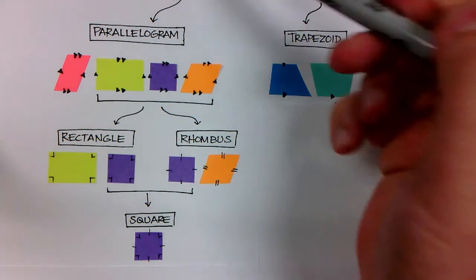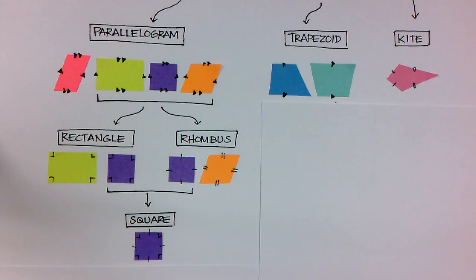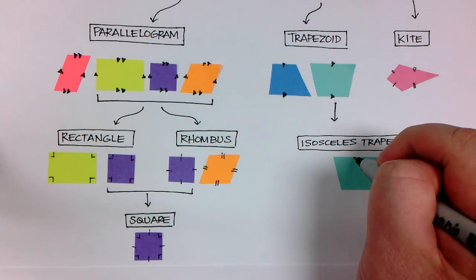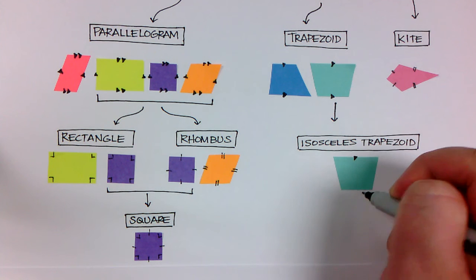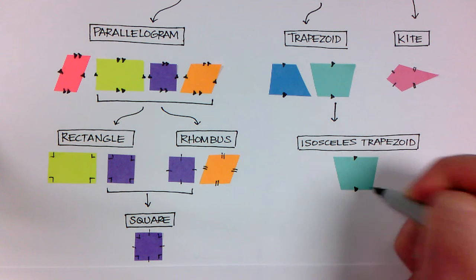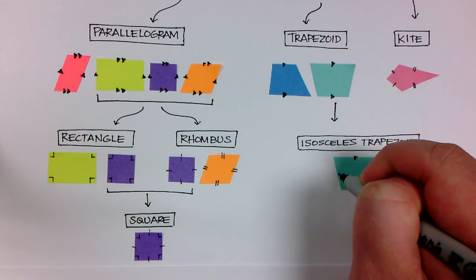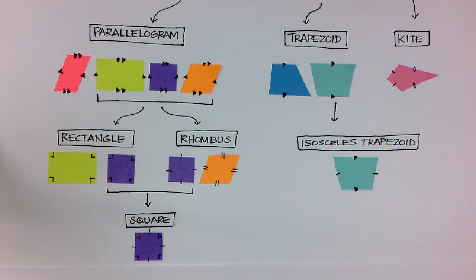So as you can see, there's all these different classifications of different shapes. Similarly, the trapezoid, there's one more specific trapezoid, which is the isosceles trapezoid. And that is where not only are the bases parallel to one another, but the legs are congruent to one another as well.